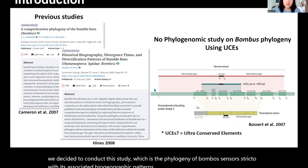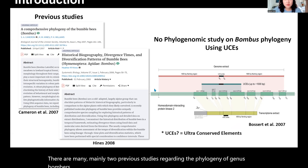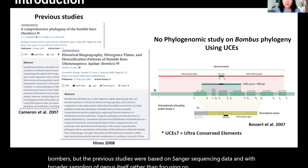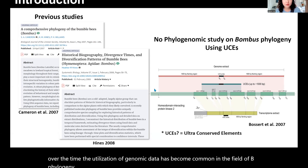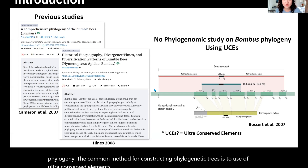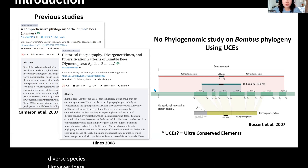There are mainly two previous studies regarding the phylogeny of genus Bombus, but they were based on Sanger sequencing data with broader sampling of the genus itself, rather than focusing on Bombus sensus stricto. Over time, the utilization of genomic data has become common in bee phylogeny. The common method for constructing phylogenetic trees is the use of ultra-conserved elements, UCEs, which represent highly conserved DNA sequences present in the genomes of diverse species. However, there has been no research using UCEs to analyze the phylogeny of Bombus sensus stricto.